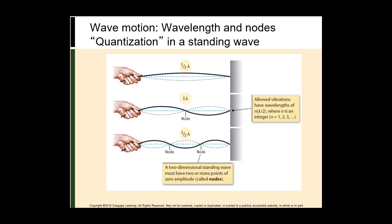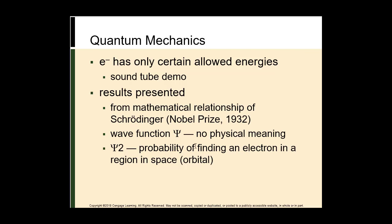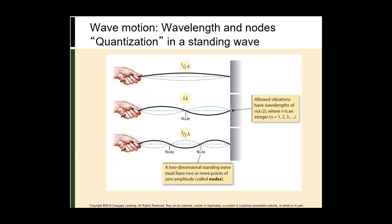To describe these waves, physicists defined a series of mathematical equations called wave functions, designated by the Greek letter psi (P-S-I). When these equations are solved for energy, only certain wave functions are found to be acceptable, and each is associated with an allowed energy value — the energy of the electron in the atom is quantized. The solution to Schrödinger's equation for an electron in three-dimensional space depends on three integers — n, l, and ml — called quantum numbers.